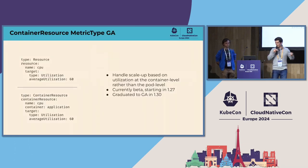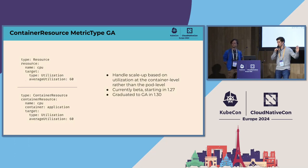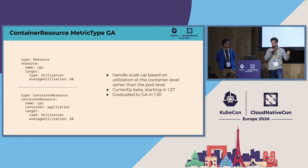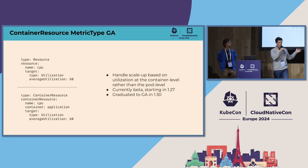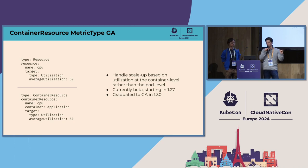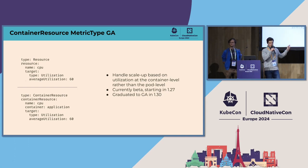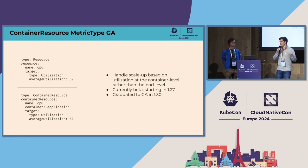On HPA: the container resource metric type is hitting GA in 1.30, which is super exciting. Previously, configuring HPA metrics meant performing it on a summation of pod resource requests across all containers — not ideal if you have containers with highly different CPU and memory utilization levels. Now you can scale based on the utilization of a single container rather than the entire pod. It was beta starting in 1.27 and will hit GA in 1.30.